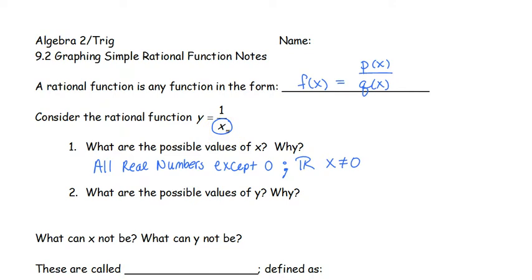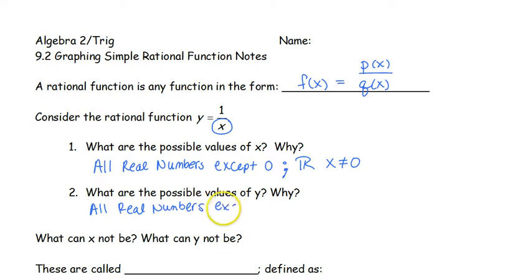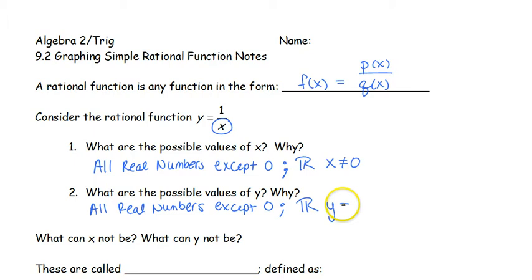If I plug in a fraction, my number on top is going to get bigger and bigger. If I type in a number like 1 over 100, it's going to get smaller and smaller. The only number y can't be is 0, so again it's all real numbers except 0. We write this as: all reals, y cannot be 0.